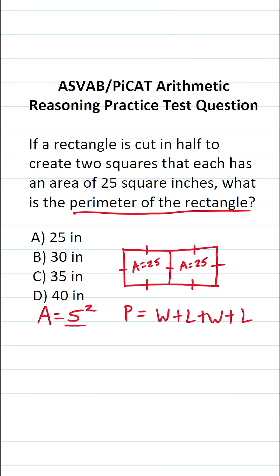Again, we know the area of one of these squares is 25. So this becomes 25 equals S squared. To get S by itself, we're going to take the square root of both sides. This crosses out. This says S is equal to the square root of 25, which is 5.